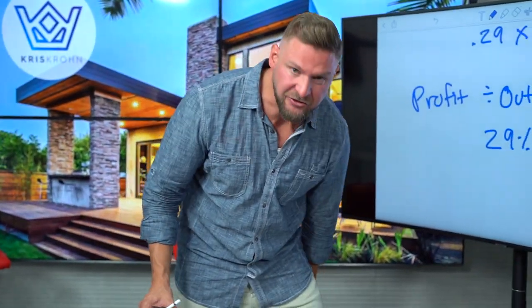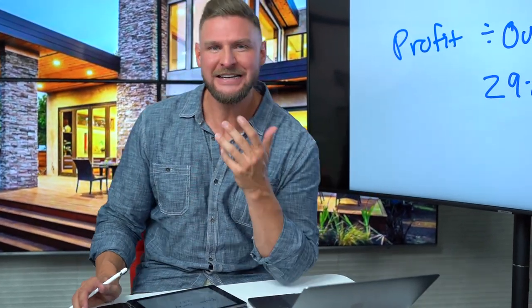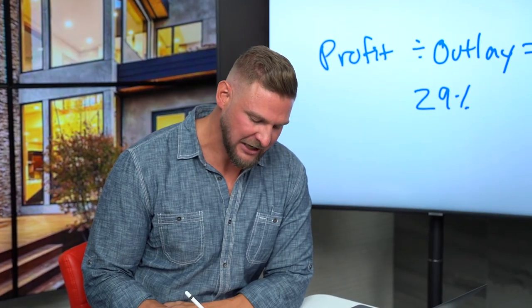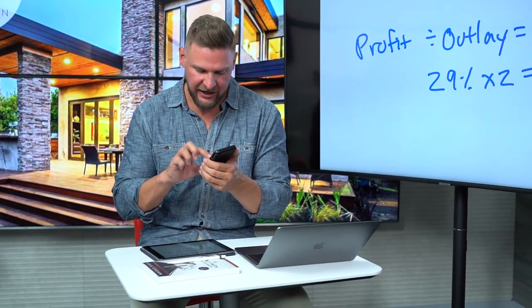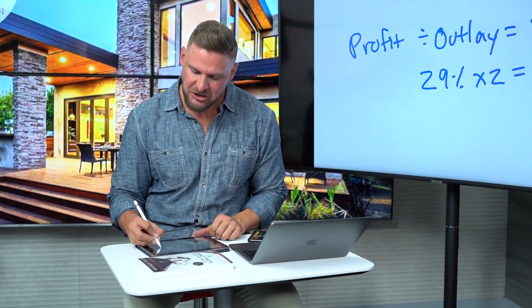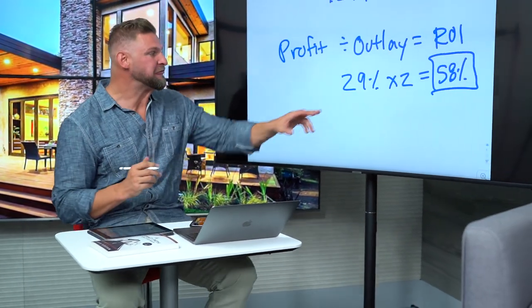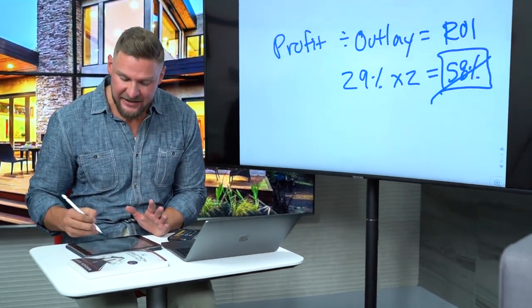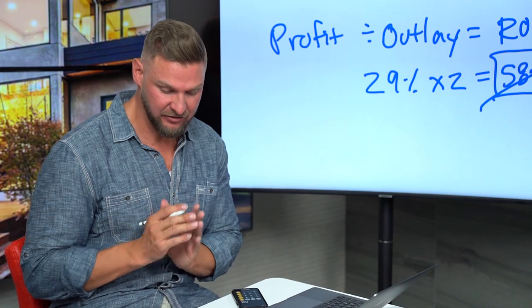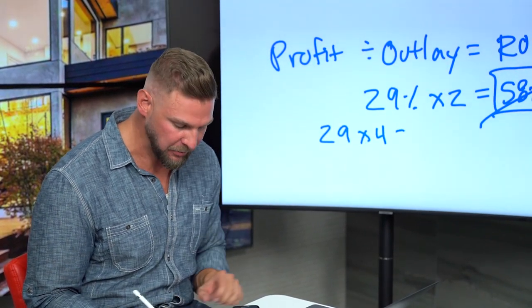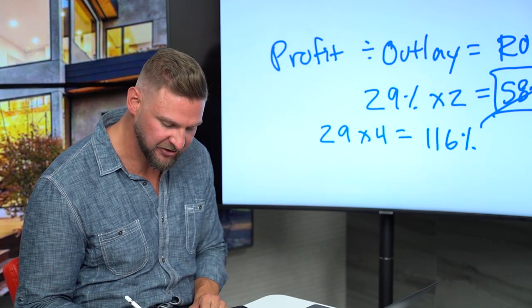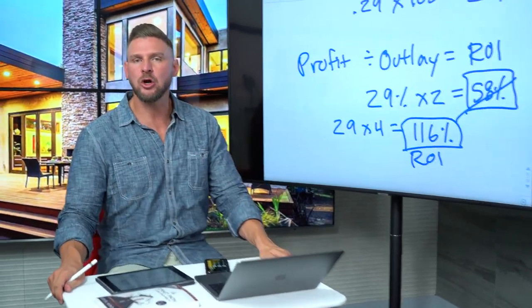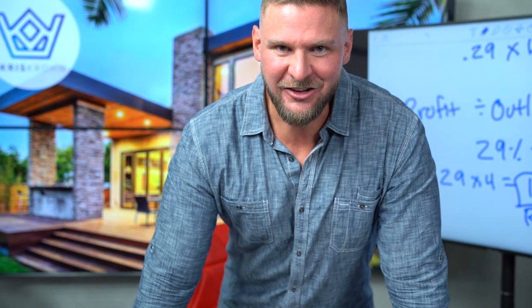This assumes it's my annual ROI. Now let's assume I did this deal in 6 months, not 12. I would take the 29 and multiply it by 2 because I did it in half the time — so 29 times 2, I actually annualized made a 58% return on my money. Let's say I did it in 90 days — cutting it by a factor of 4. I take 29 and multiply by 4. That is a 116% ROI — no longer a double digit return, it's a triple digit return.